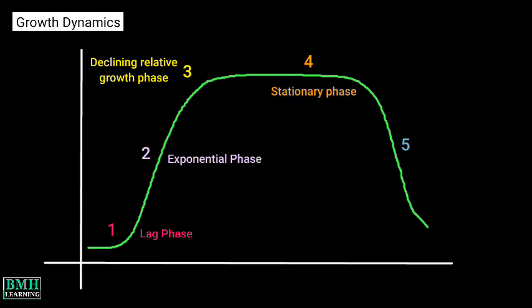Next is the stationary phase. In this stage, the limiting factors and the growth rate are balanced, leading to a relatively constant cell density. Finally, it is followed by the death or crash phase. In this final stage, water quality deteriorates and nutrient depletion is observed to a level which is unable to sustain growth, resulting in a rapid decrease in cell density and the culture eventually collapses.